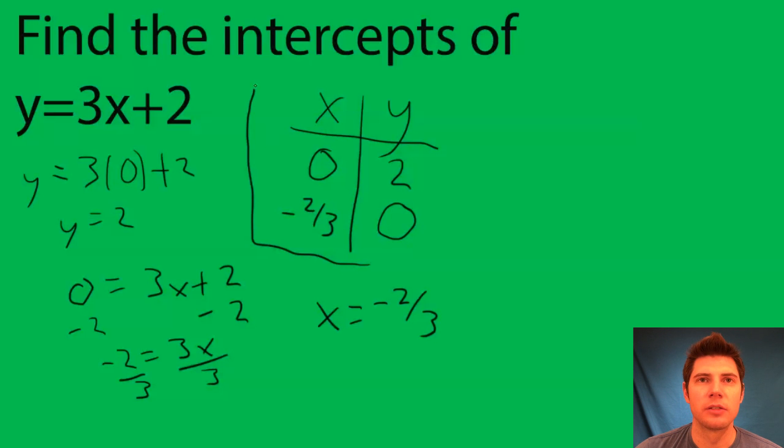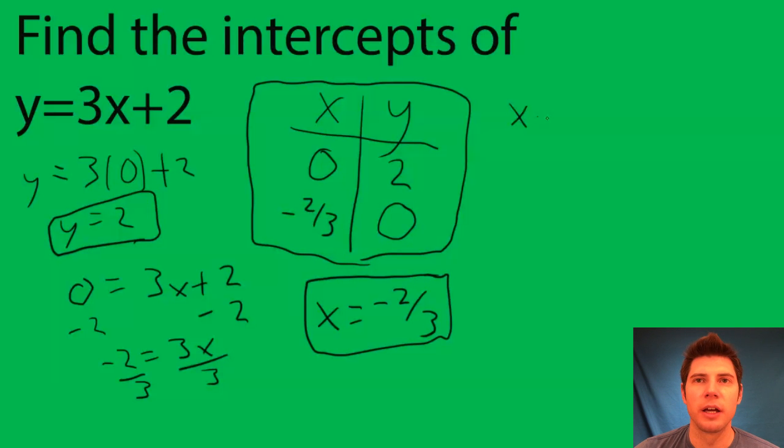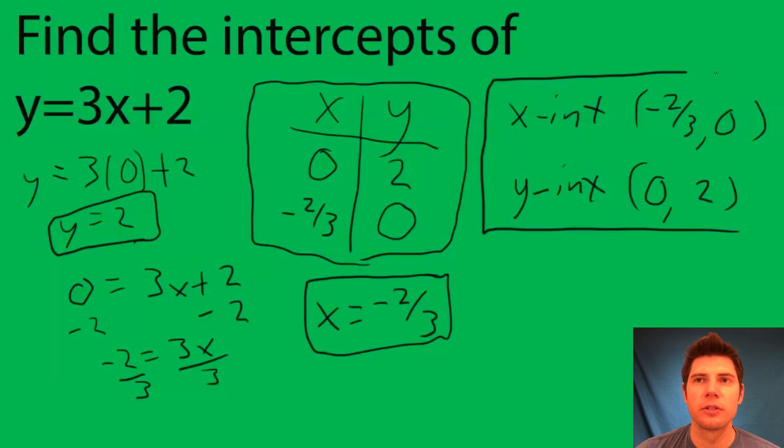So I think this is a good way to answer the question. This could also be another way to answer the question. But formally it would be the x-intercept is negative two-thirds comma zero and the y-intercept is zero comma two. So this is probably the most formal way you can answer it.